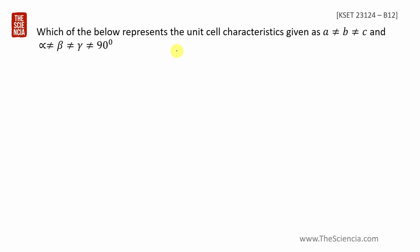Which of the below represents the unit cell characteristics given as a ≠ b ≠ c and α ≠ β ≠ γ ≠ 90°? The correct one of these aspects is the one where a ≠ b.